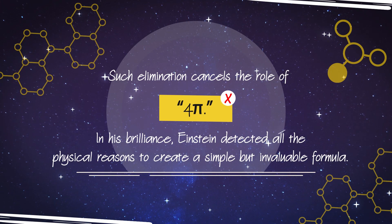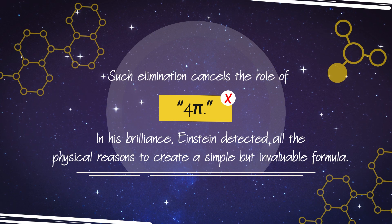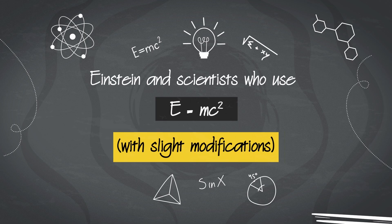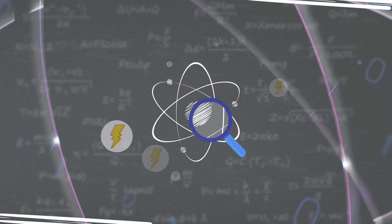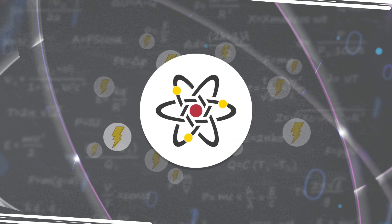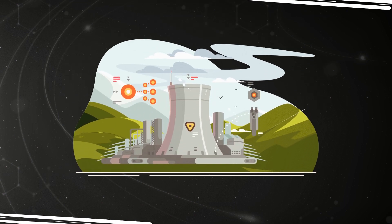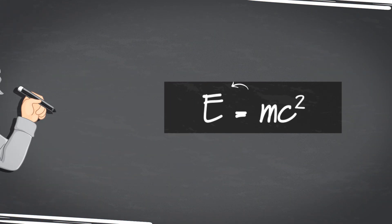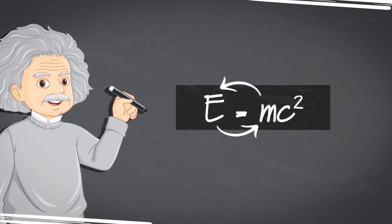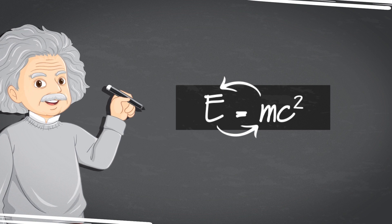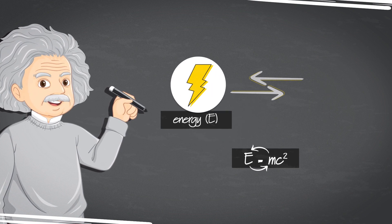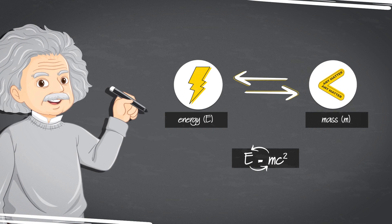In his brilliance, Einstein detected all the physical reasons to create a simple but invaluable formula. Einstein and scientists who use E equals mc-squared with slight modifications to calculate the quantities of energy released from masses generally produce satisfactory results. Despite some mathematical flaws and contributions to creating nuclear power plants and stocks of nuclear arsenals, Einstein's work would have constituted one of the world's most significant scientific contributions if E equals mc-squared had only accurately described the process of converting mass into energy.